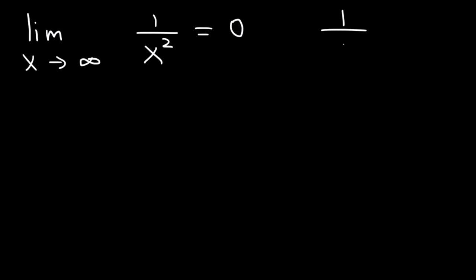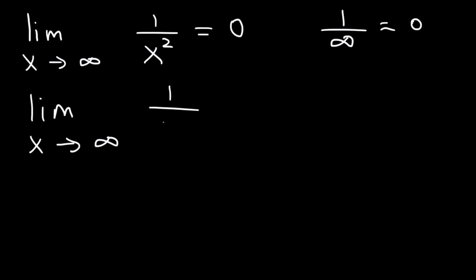Anytime you have 1 divided by infinity, it's always going to equal 0. Here's the general theorem: the limit as x approaches infinity of 1 over x to the r will always be equal to 0. That's something you may want to keep in mind.